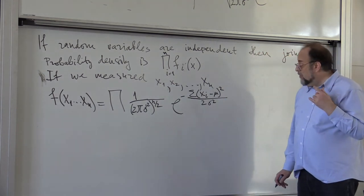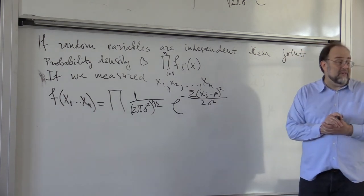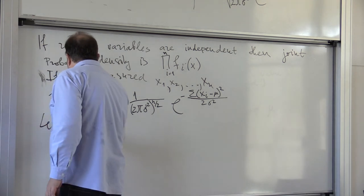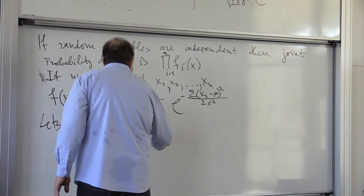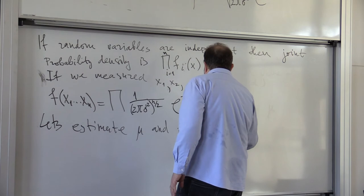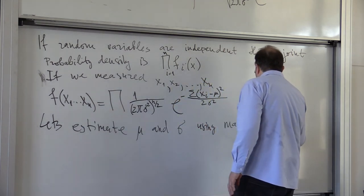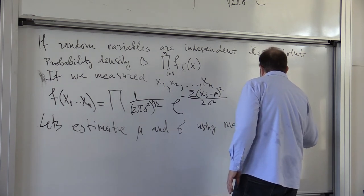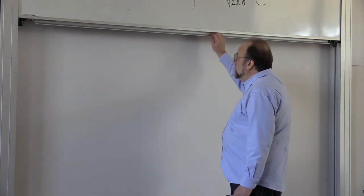So we want to estimate mu and we want to estimate sigma. So let's estimate mu and sigma using maximum likelihood. We have to maximize this expression.